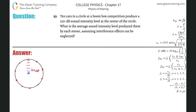Number 23. Ten cars in a circle at a boombox competition produce a 120 decibel sound intensity level at the center of the circle. What is the average sound intensity level produced there by each stereo, assuming interference effects can be neglected.